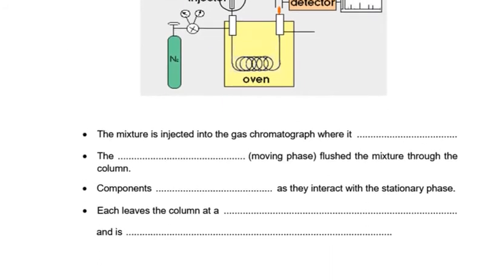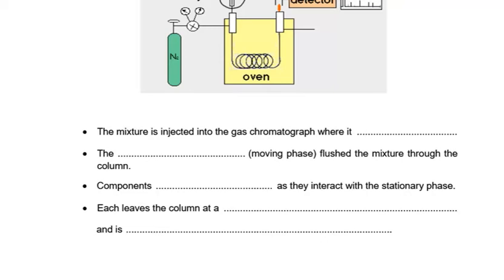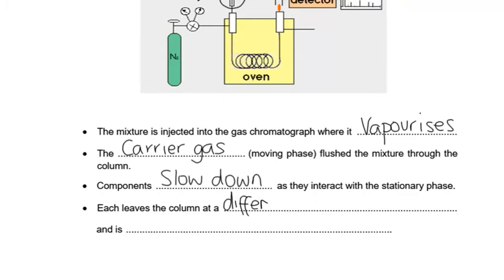Again, it's not the required practical, so a bare minimum of detail needed here. We inject the sample into the gas chromatography machine, where it's going to vaporize, because it's in an oven and they're very volatile. The carrier gas, the inert gas, the moving phase, pushes it through the column. And components slow down as they are retained by the stationary phase. Each component leaves at a different time, and we call that its retention time, and it's detected. So we can measure these retention times.